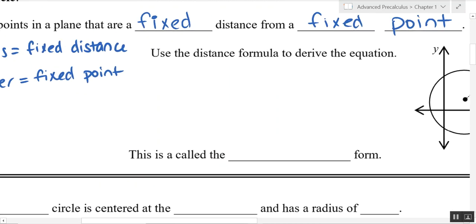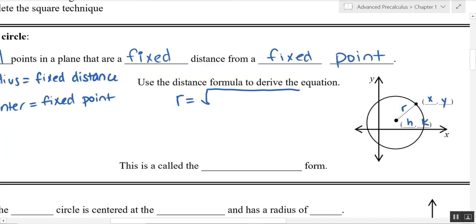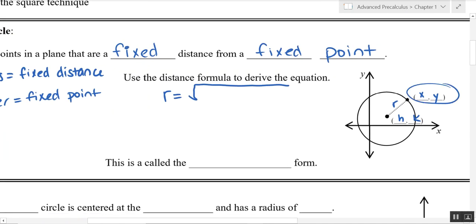We'll use the distance formula here to derive the equation for a circle. We know that fixed distance is our radius and we'll use the distance formula to calculate the distance between both of these two points. So we'll say the difference in our X coordinates, X minus H quantity squared, plus the difference in our Y coordinates, Y minus K squared. And that is the distance formula.